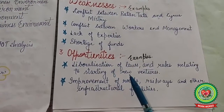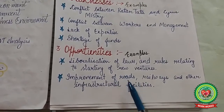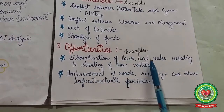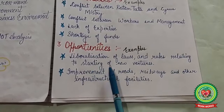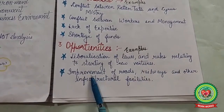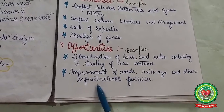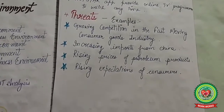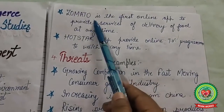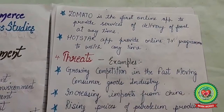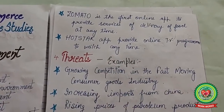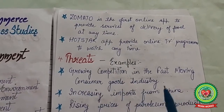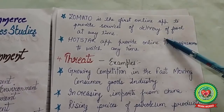The next key term is opportunities — favorable conditions that provide strength to the company. For example, liberalization of laws and rules relating to starting new ventures, improvement of roads, railways, and other infrastructure facilities. Zomato, the first online app to deliver food, and Hotstar are examples of companies that identified opportunities to provide goods and services according to consumer needs.